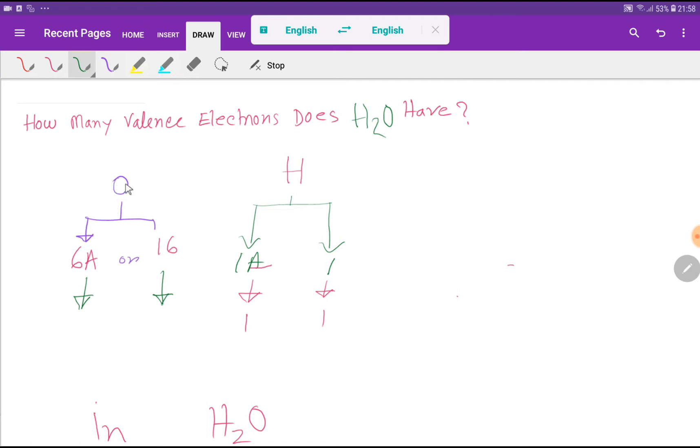Oxygen is an element of group 6A, which means oxygen has six valence electrons. Or, oxygen is an element of group 16, so the valence electrons of oxygen will be 6. You have to deduct the first digit, or deduct the A.